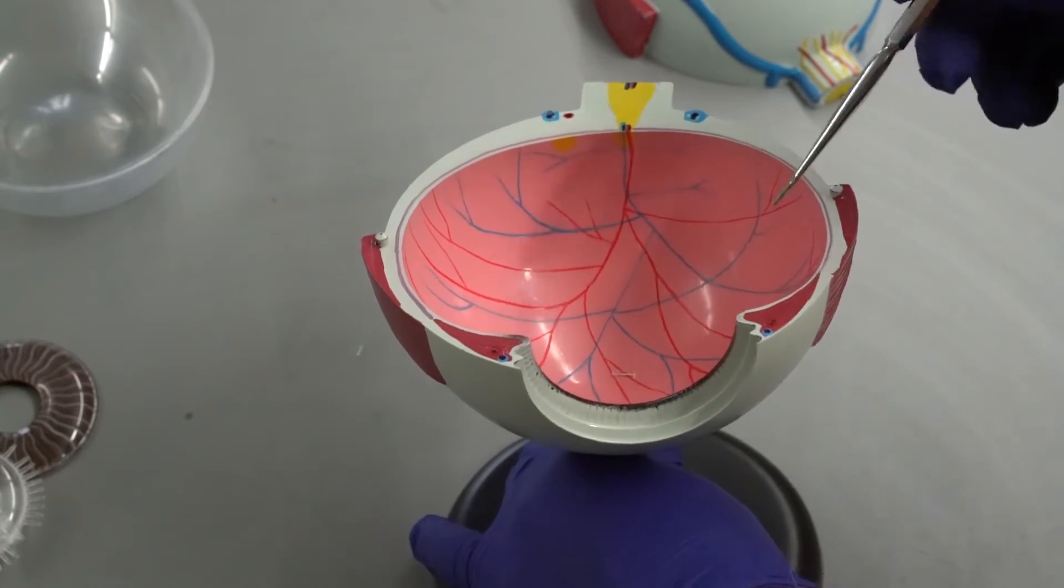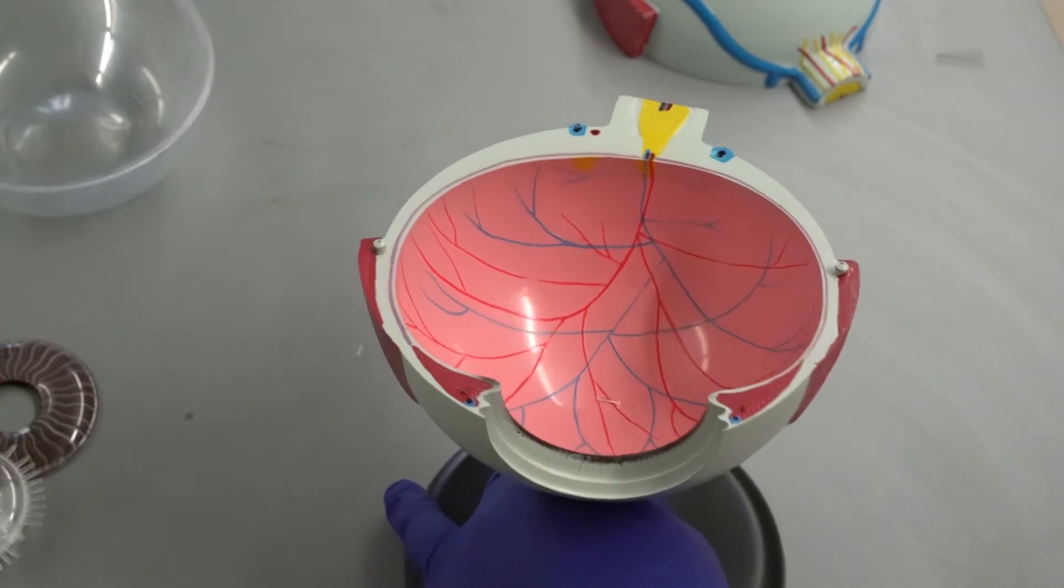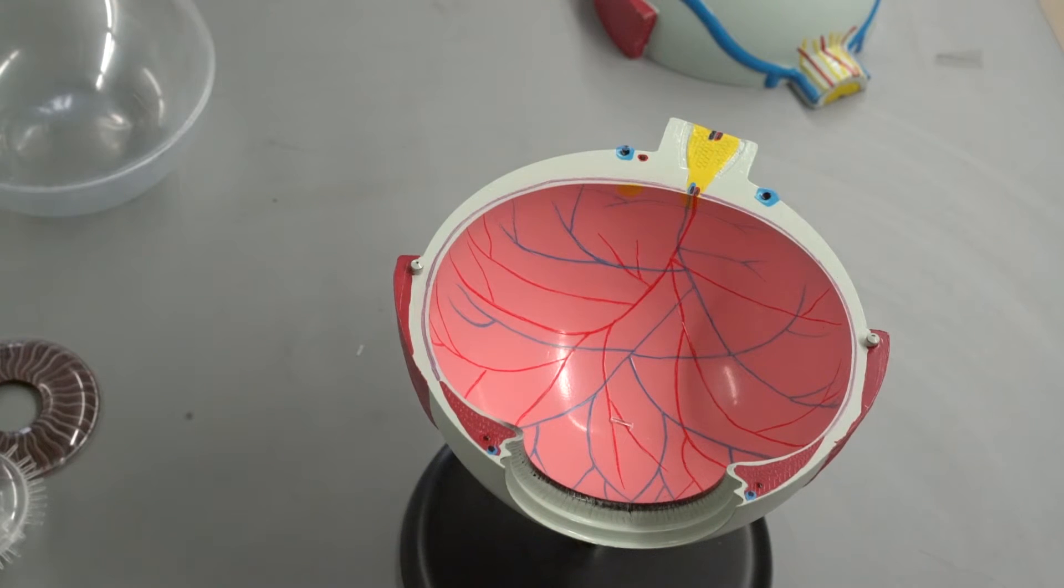Another part of the retina you need to know is how the rods and cones are organized. So you do have rods and cones in your retina. That's what's detecting light. Rods detect more of a dim light, while cones are what detect color.